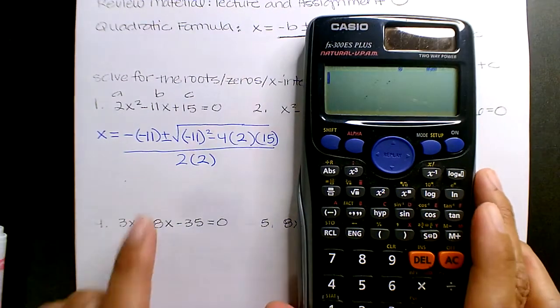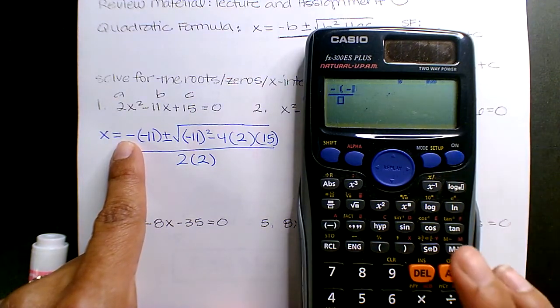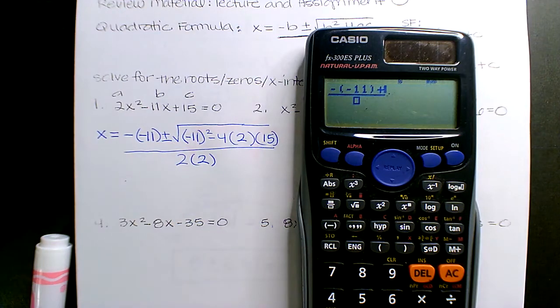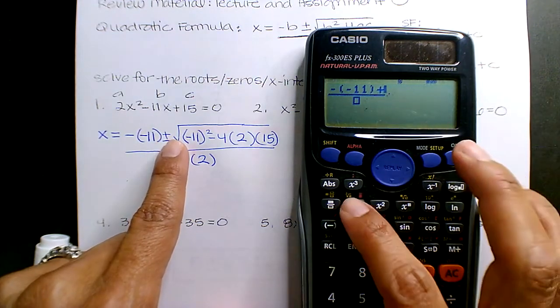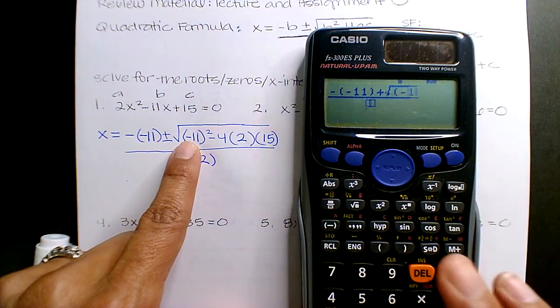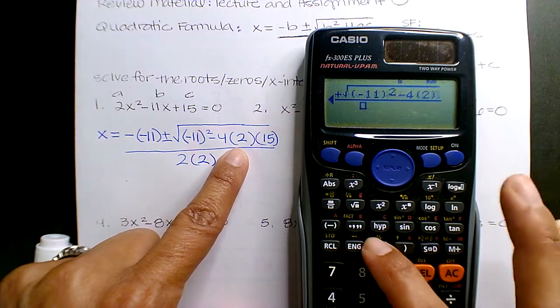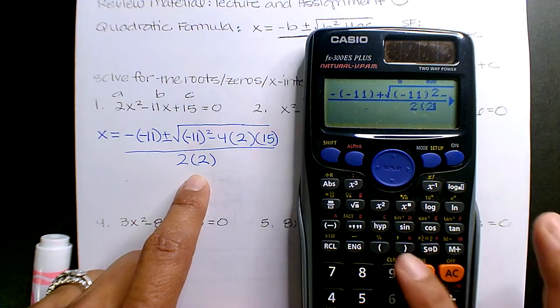All right, what you see is what you type. Fraction, negative, negative 11, do the plus first, and then you can go back and change it to the negative, the minus, because remember it's plus minus. Just do the plus first. So square root, negative 11 squared, minus 4, 2, 15, down to 2.